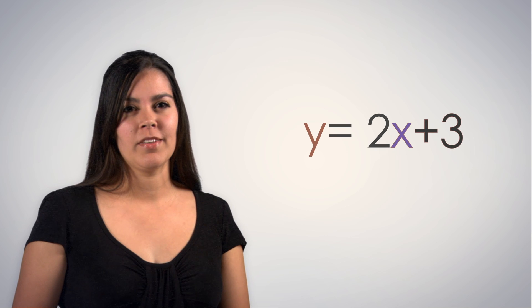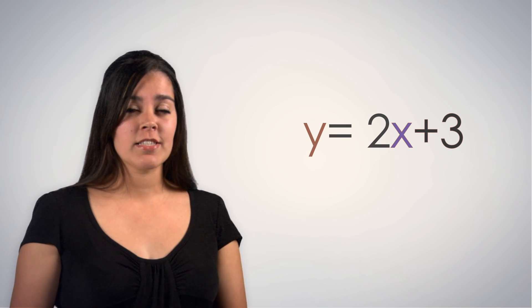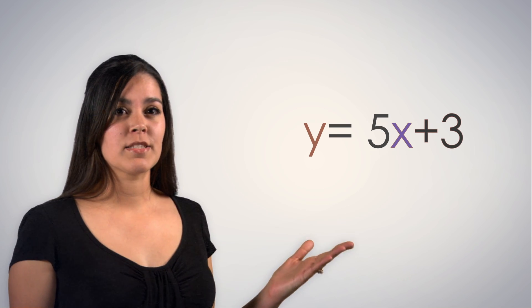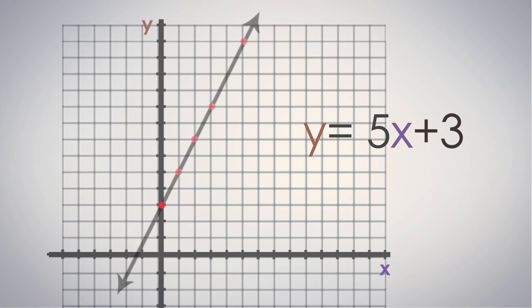Now let's imagine that your shows are really rocking and you're able to add fans at a rate of five per day. Our function changes to this, y equals 5x plus 3. Notice how the line is steeper. It has a greater slope, which shows the increased rate of change.